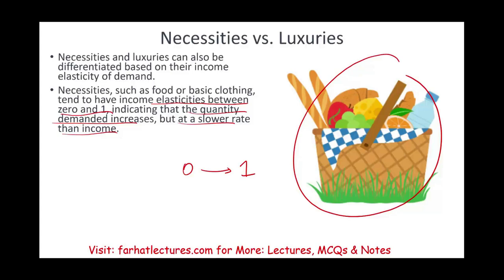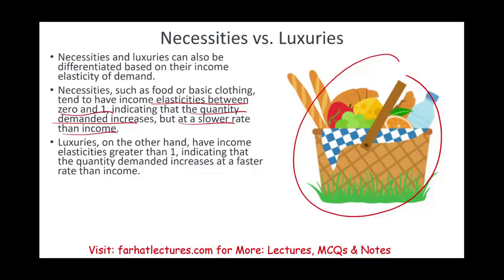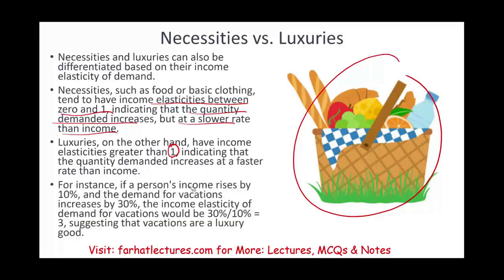When it comes to food, even if you make more money, how much more are you going to buy in food or basic clothing? Not that much. You might start buying brand names — that's different — but basic clothing and food will stay about the same. Luxuries, on the other hand, have income elasticity greater than 1, meaning demand increases at a faster rate as income increases. For example, if a person's income rises by 10% and the demand for vacations increases by 30%, the income elasticity equals 3, suggesting that a vacation is considered a luxury.